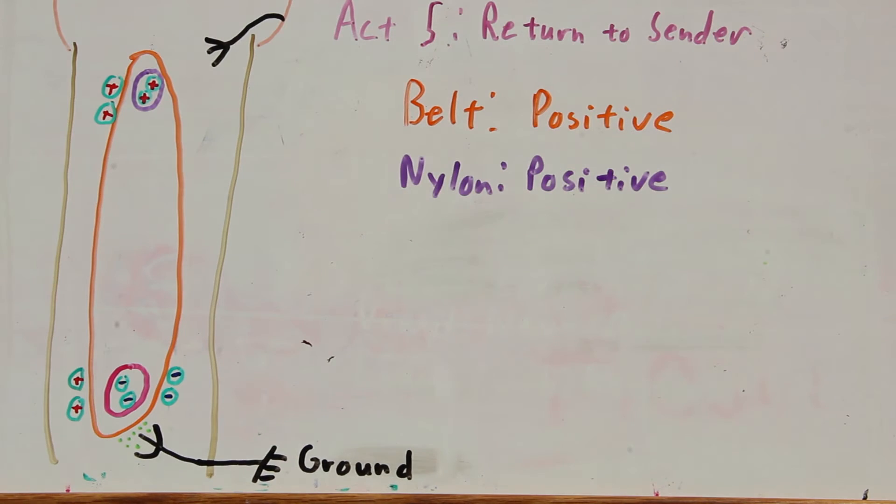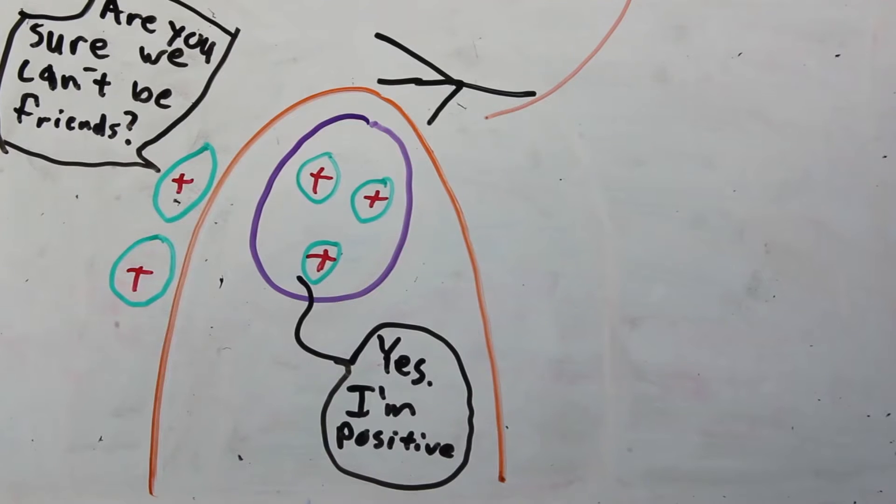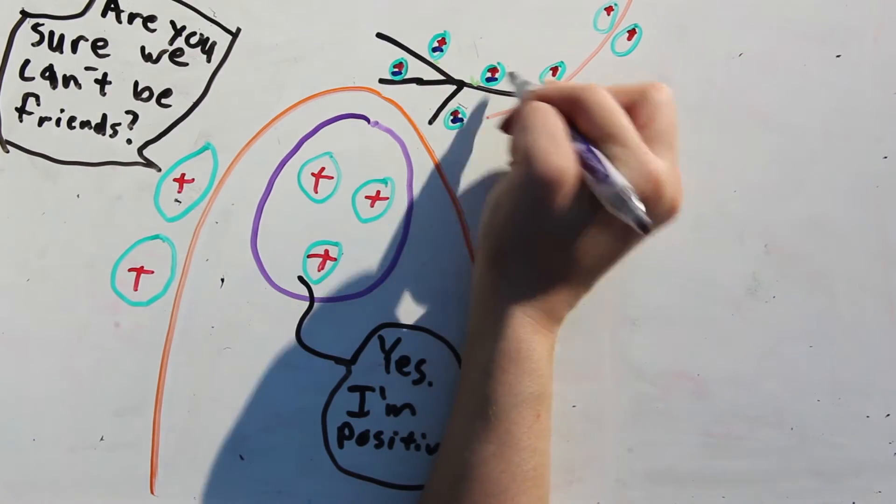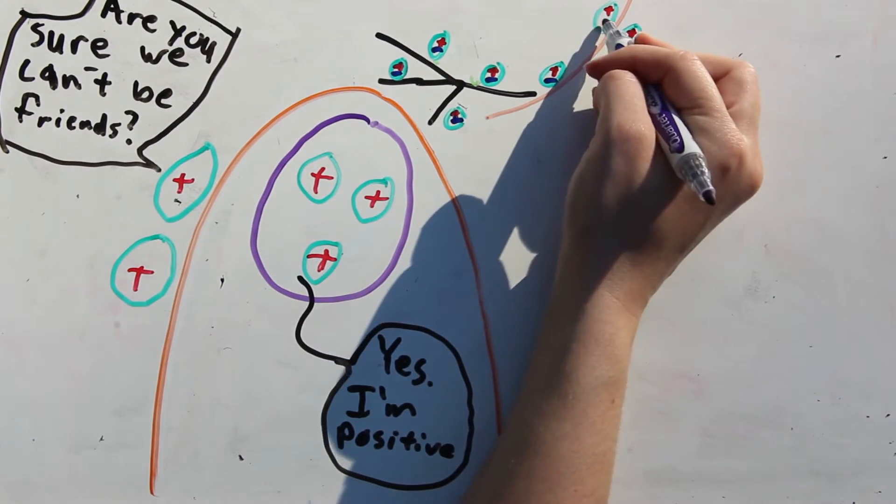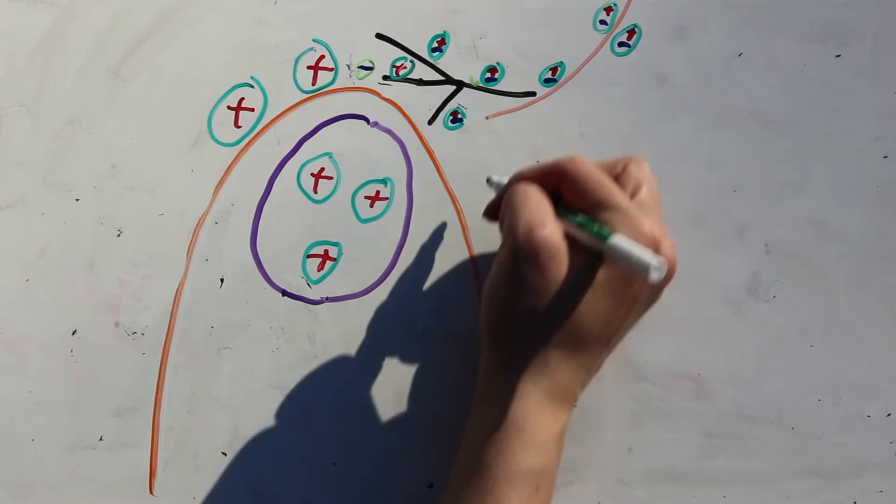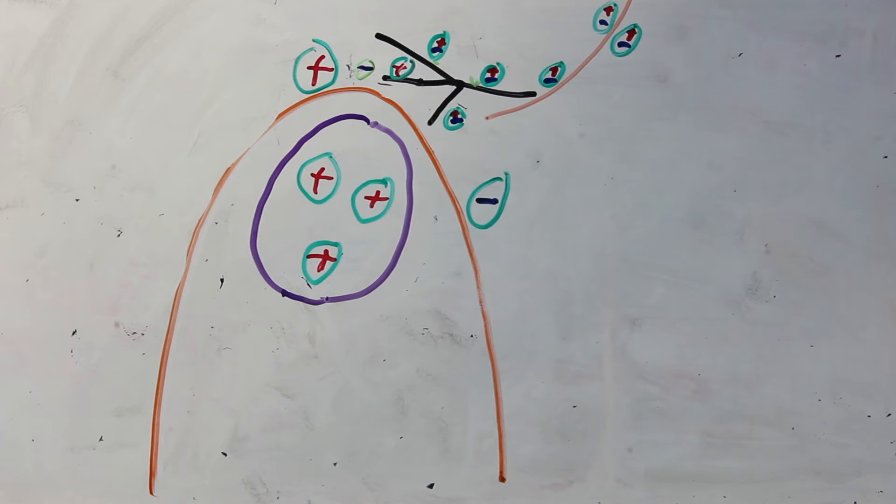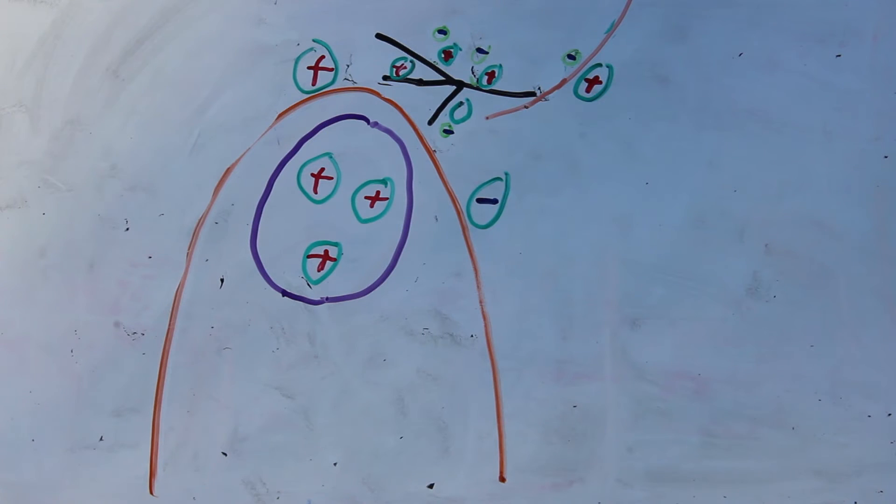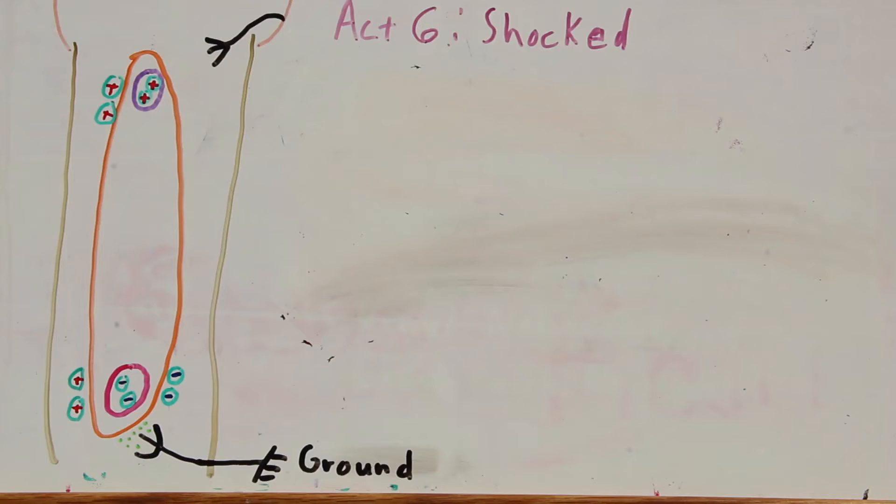Since the belt and the roller have the same charge, they repel each other. But this time, instead of the electrons in the comb being repelled, they are attracted to the belt. Another electric field is created and the belt steals electrons from the air molecules. These ionized air molecules gain electrons from collisions with each other and eventually from the upper comb. The electrons in the upper comb are replenished by stealing ones from the dome.